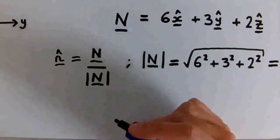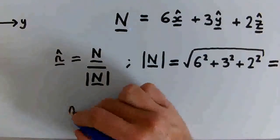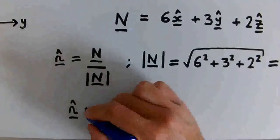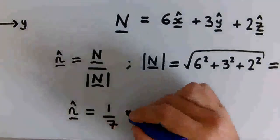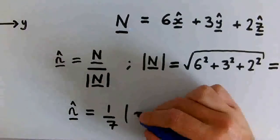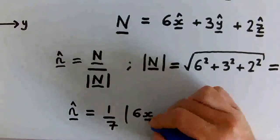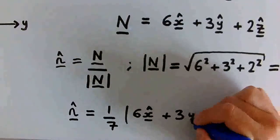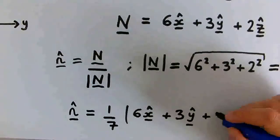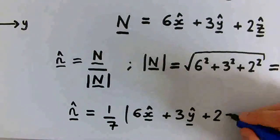So now we can write n-hat as 1 over 7 times (6 x-hat plus 3 y-hat plus 2 z-hat).